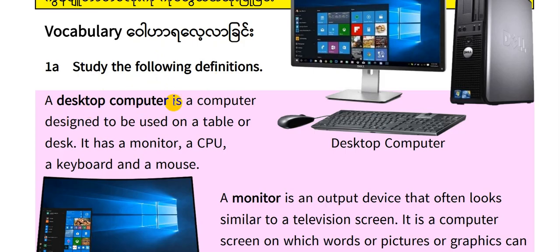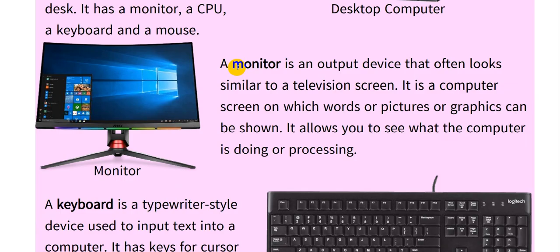A desktop computer is a computer designed to be used on a table or desk. It has a monitor, a CPU, a keyboard and a mouse. A monitor is an output device that often looks similar to a television screen.